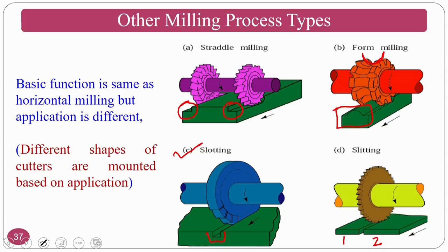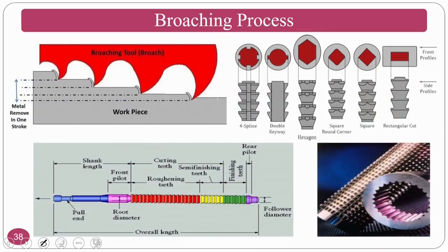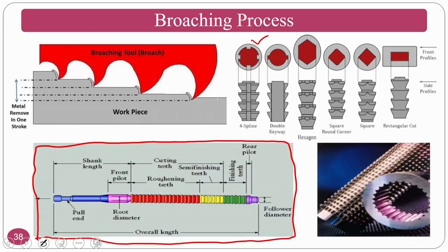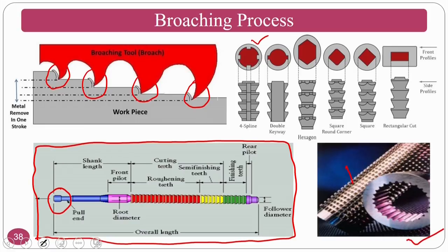Broaching is another operation where big holes are machined. The tool used is called a broach. Various broach shapes can generate splines, double key ways, hexagons, squares, rectangles, and many other shapes. The minimum requirement is an existing hole; you insert the broach and pull it from the other side, so gradual material removal takes place and it forms the required shape across the hole.